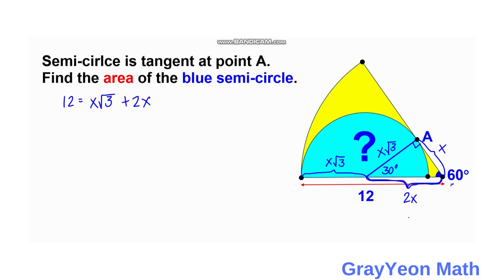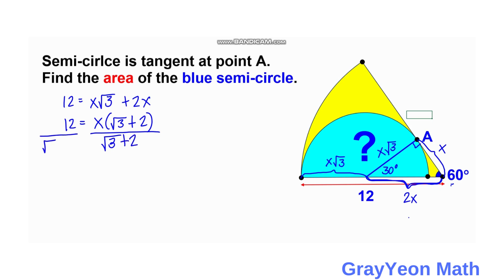We factor out x since it is common: x times (√3 + 2) equals 12. Dividing both sides by (√3 + 2), we get x equals 12 over (√3 + 2).